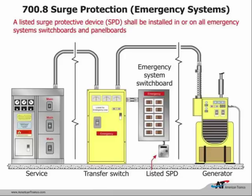Chapter 7 covers emergency systems. A listed surge protector device must now be installed on all emergency system switchboards and panel boards. In a hospital, there's a lot of electronic equipment, and they want to make sure the emergency system is reliable to take care of patients who may be depending on it.